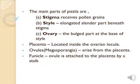The stigma is the landing place of pollen grains. The style is the long, slender part. The ovary is the bulged portion at the base of the style. The ovary consists of ovules, which produce the egg or ovum. The ovary cavity is surrounded by the placenta, and the ovules arise from the placenta. The ovule is attached to the placenta by a stalk called the funicle.